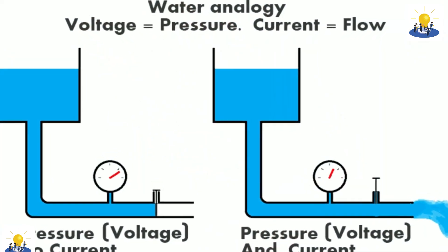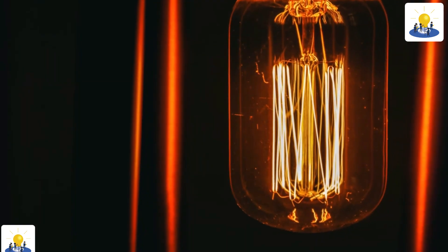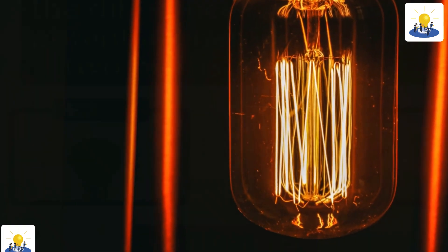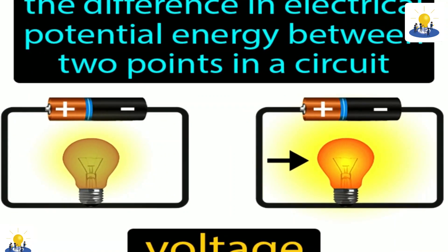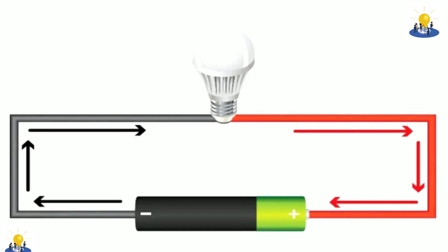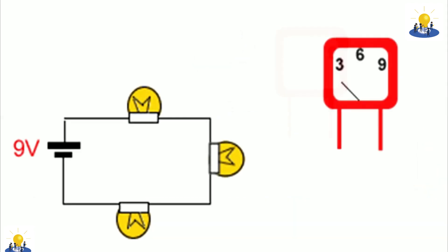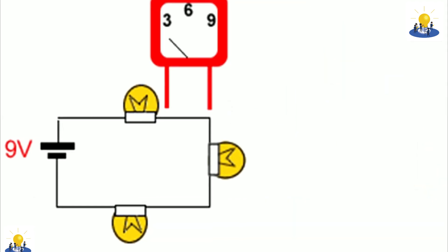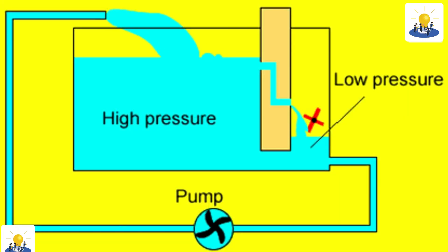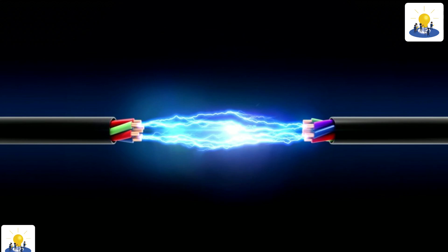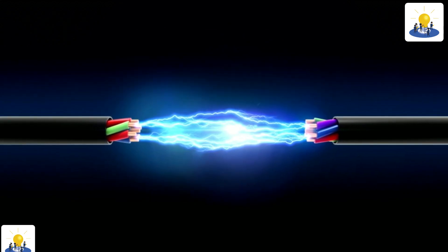A voltage is nothing more than a difference in charge between two places. For example, suppose you have a small clump of metal whose atoms have an abundance of negatively charged atoms and another clump whose atoms have an abundance of positively charged atoms. In other words, the first clump has too many electrons and the second has too few. A voltage exists between those two clumps.